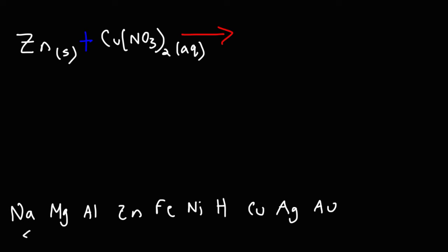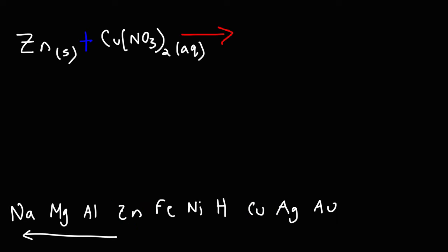The metals on the left are strong reducing agents. Note that zinc is to the left of copper — that means zinc is strong enough to reduce the copper 2+ ions into copper metal. Zinc can displace copper out of the solution, and that's how you use the activity series to determine if this reaction will work. The answer is yes, this reaction will proceed as written.